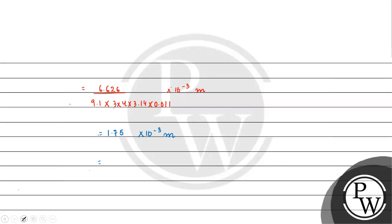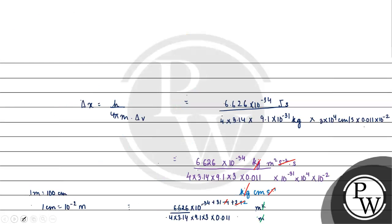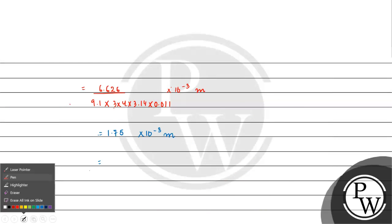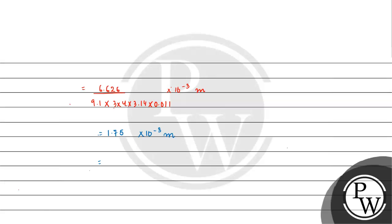Since the answer options are in centimeters, we convert: 1 meter = 100 cm, so 1.75×10⁻³ meters × 100 = 1.75×10⁻¹ centimeters.